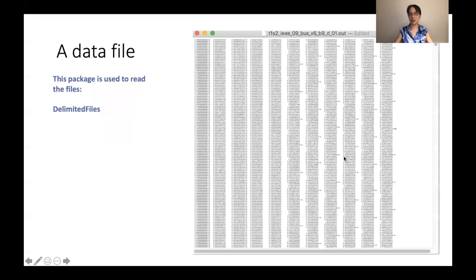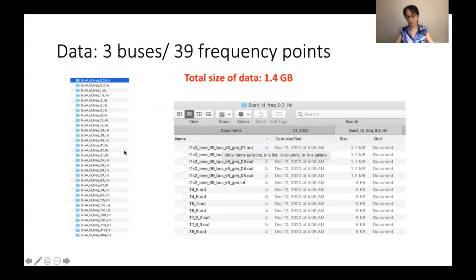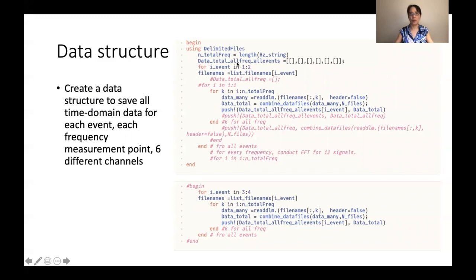Each 2.7 megabytes data, you can see it's like this. First column is time, time step, and then 10 channel data. So this package can be really nice using delimited file. You can read this file and read multiple files, one by one, read all these files. Finally, we can stack everything into a data structure. Here we use data for all frequency, array of array, array of array.